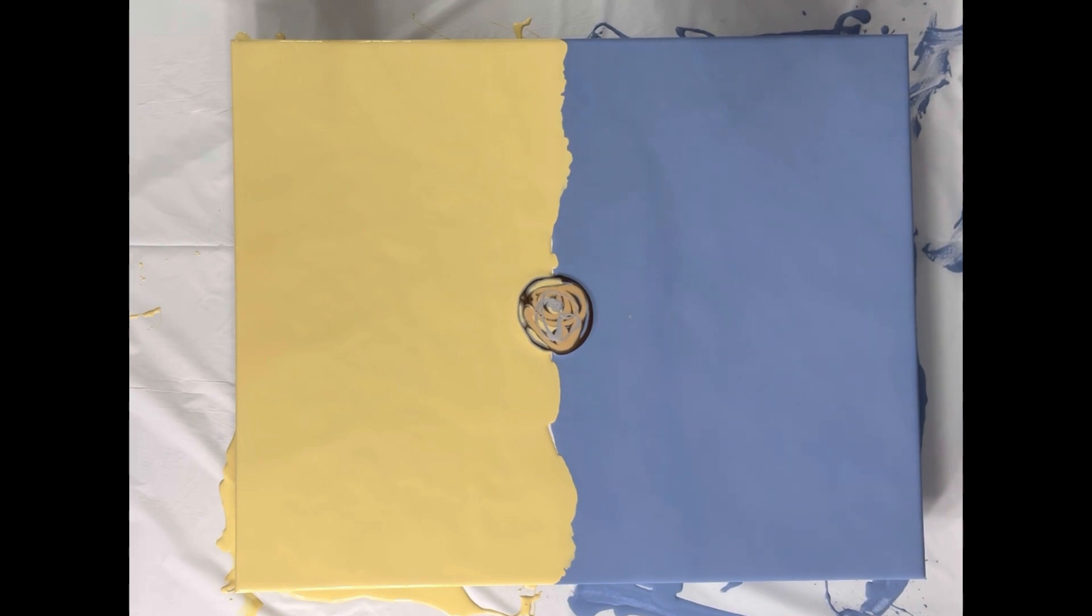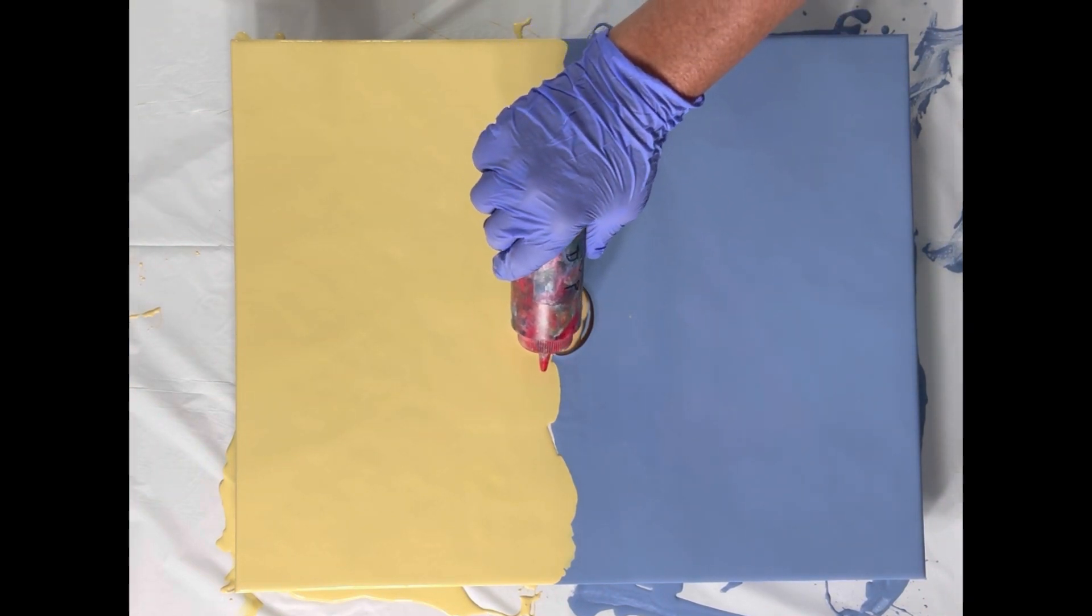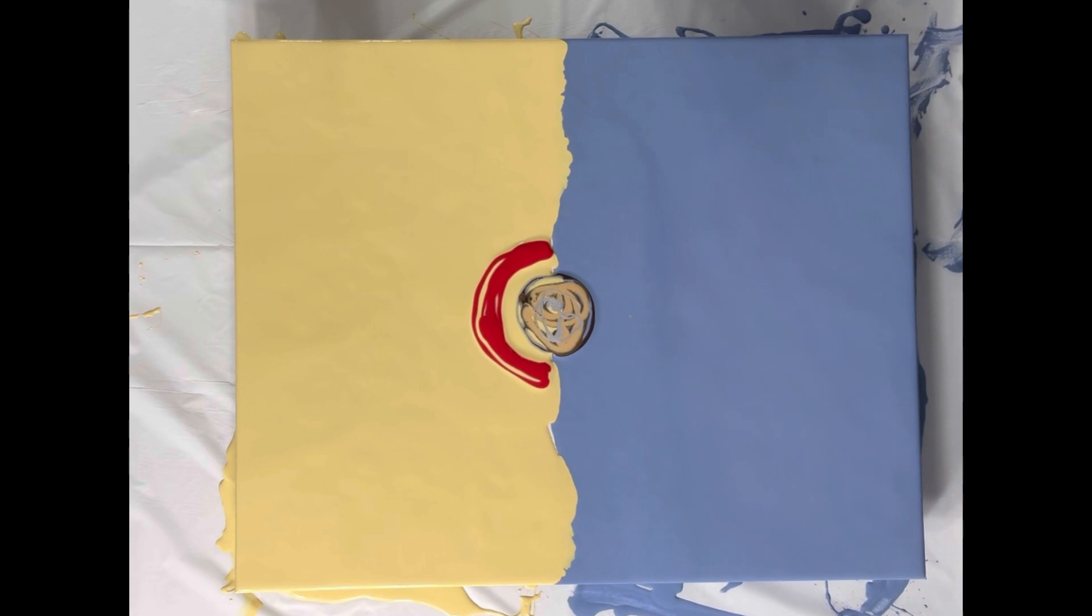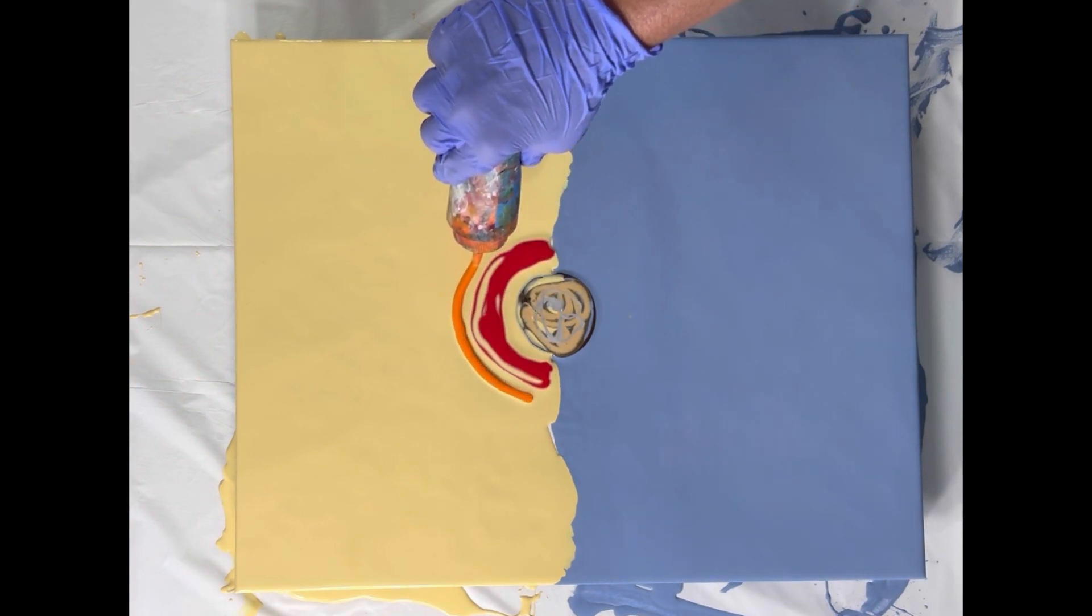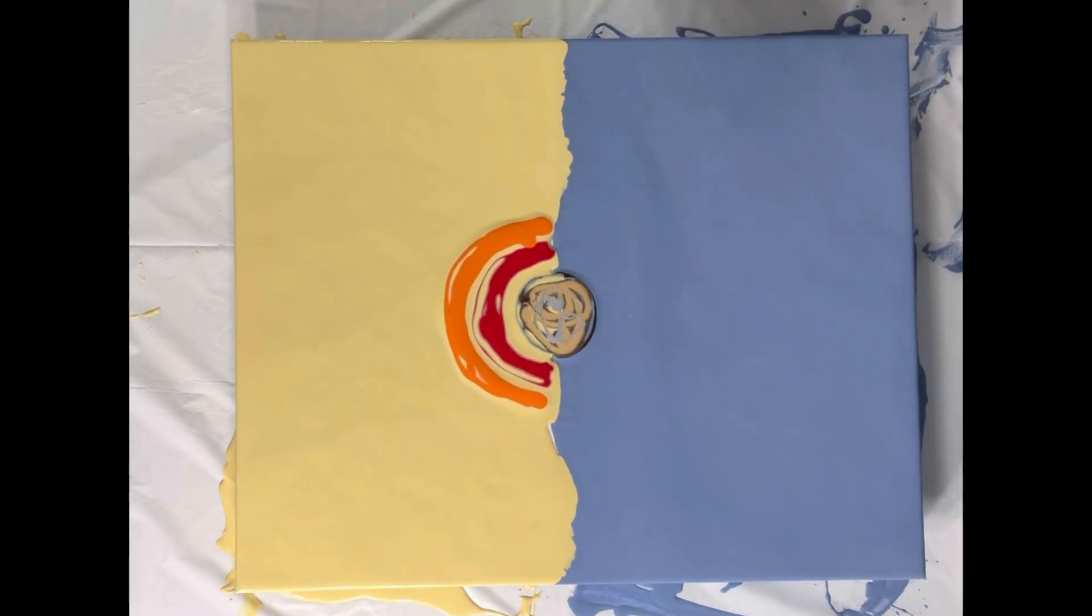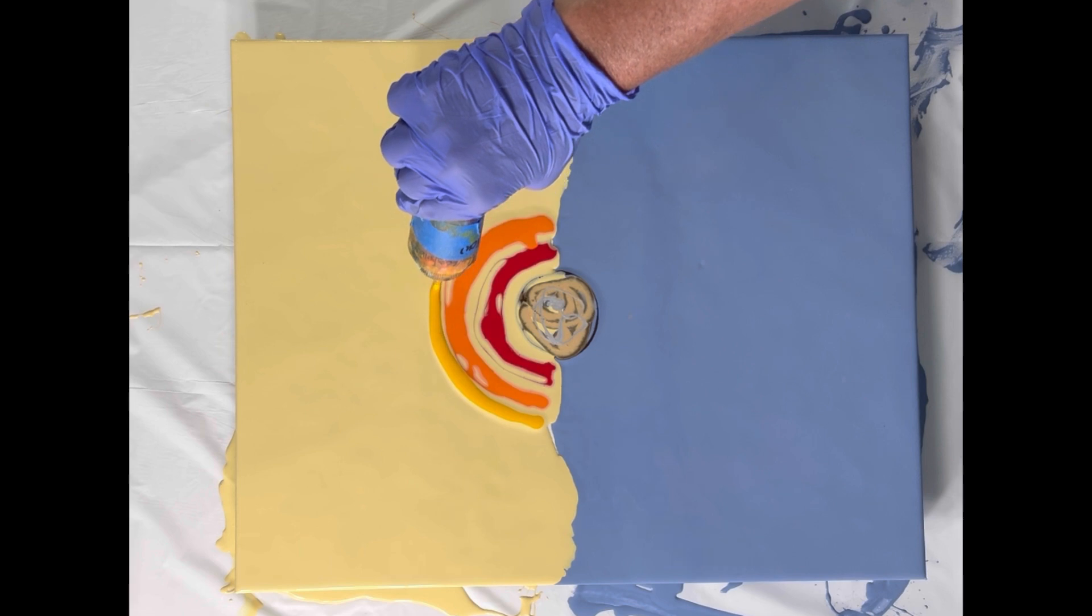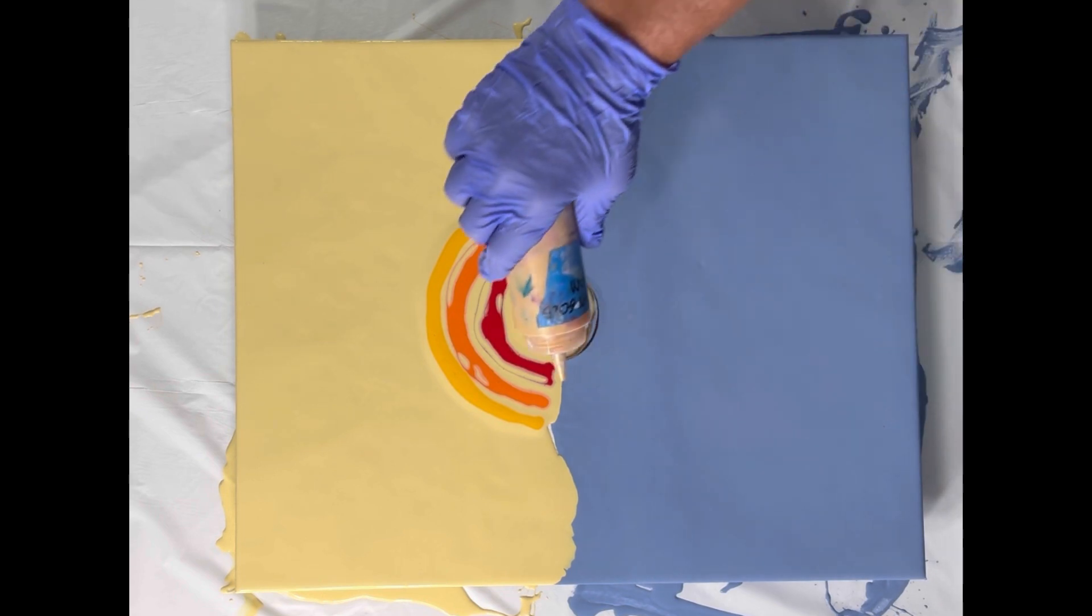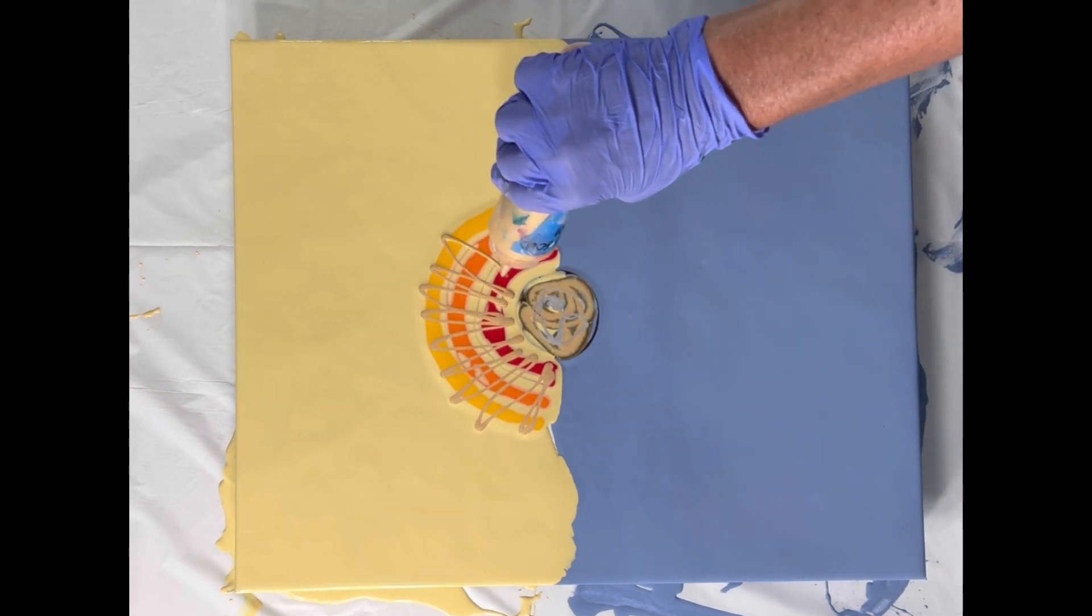All right, so I'm going to start with the Naphthol Red in the center of this one. Then I'm going to do the Azo Orange. And then I'm thinking that yellow is too light. I'm going to have to go with the Azo Yellow Deep to make enough of a difference. So let's use the Azo Yellow Deep and I'm going to throw in some light gold in there.